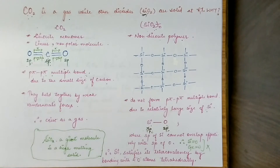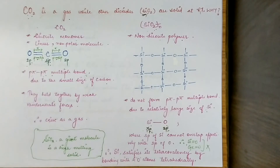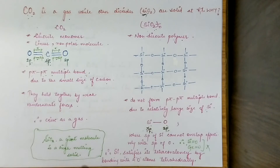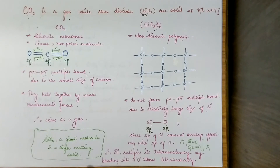So to be clear: in carbon dioxide we have a double bond, but in silicon dioxide there is no double bond — no p-pi p-pi multiple bond. Because of this, silicon's tetravalency must still be fulfilled. Silicon can form a maximum of 4 covalent bonds, so it still needs to make 4 bonds.